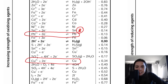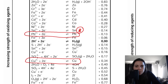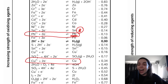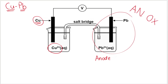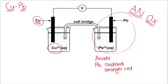The first substance you come across starting from the top right is always the one that is oxidized, and therefore it will be the anode — because at the anode, oxidation occurs (AN OX). So this half cell is my anode. How do I know? Because Pb is being oxidized — it is higher up on the table, making it the stronger reducing agent. Therefore Pb will be losing electrons.